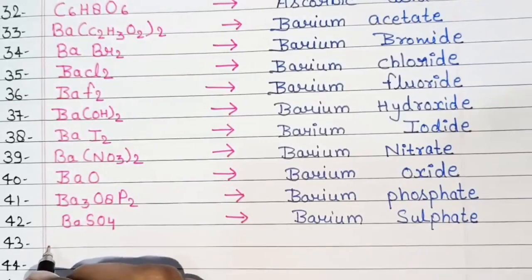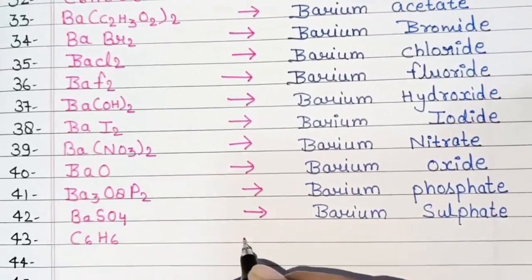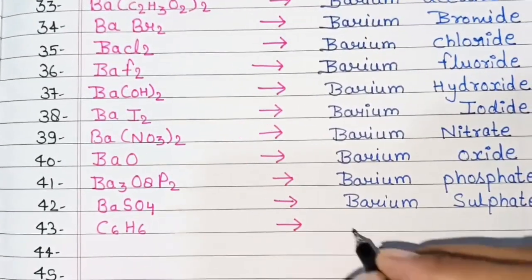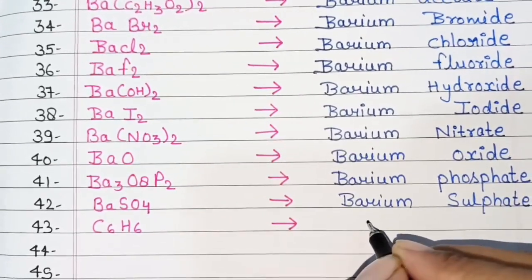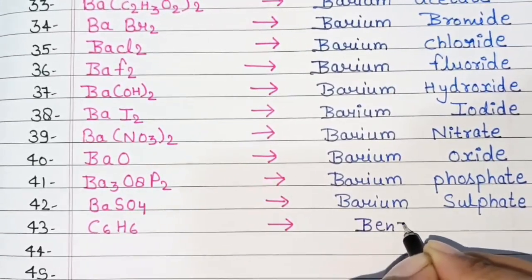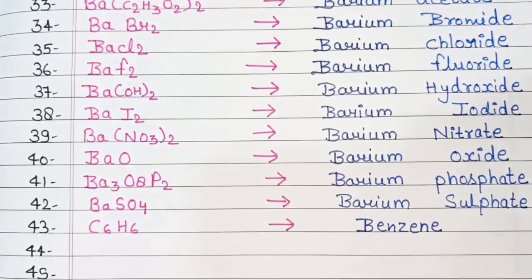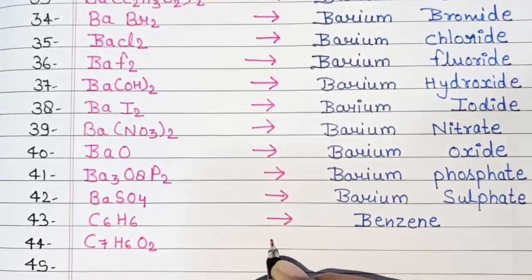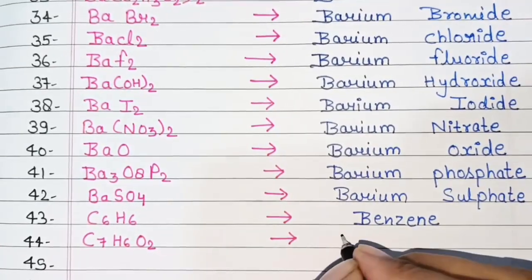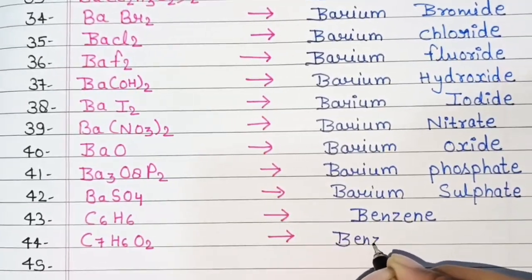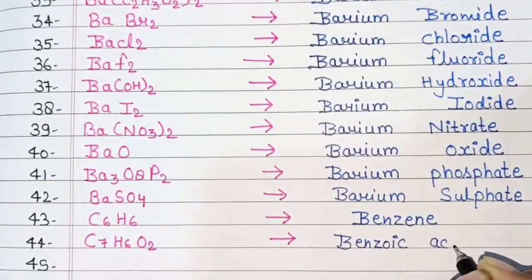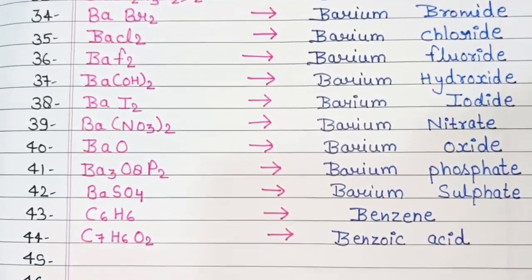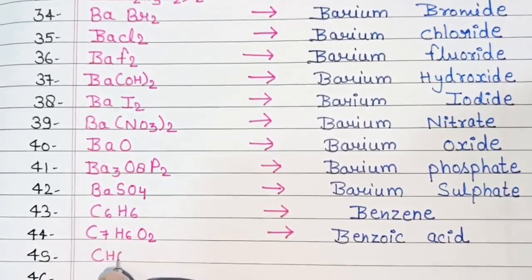Next, C6H6, Benzene. C7H6O2, Benzoic Acid. CHO3.